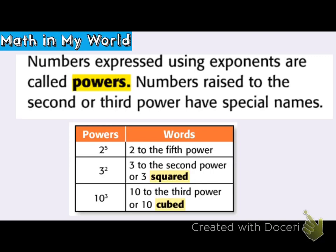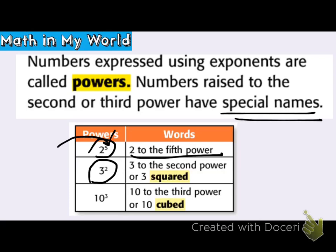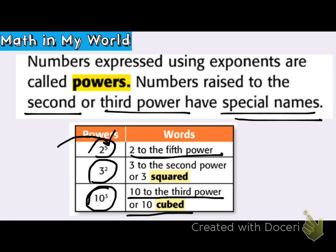I want to talk about the word powers. When we look at an exponent — that little tiny digit next to the larger base number — for example, if 5 is the base and the exponent is that small number, we pronounce it as '2 to the 5th power.' Here, 3 is the base and 2 is the exponent, pronounced '3 to the 2nd power' or '3 squared.' It's given a special name if it's to the 2nd or 3rd power. 10 to the 3rd power can also be called '10 cubed.'